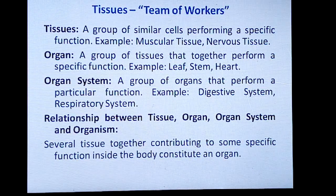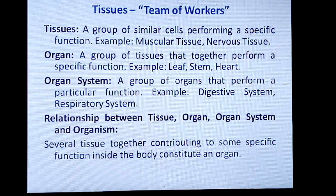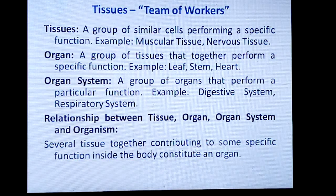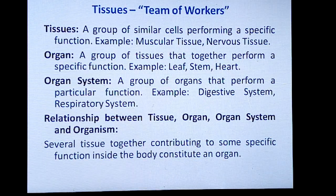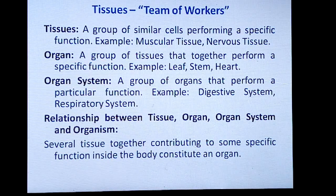What is tissue? Tissue is like a team of workers — a group of similar cells performing a specific function. Examples are muscular tissue and nervous tissue. Suppose you take our muscles: they are all made up of similar kinds of cells, which is why we call it muscular tissue.